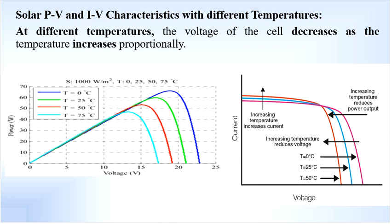The voltage is going to be reduced, but the current increases with temperature. At T equals 0 degrees centigrade the curve is pink, at T equals 25 degrees centigrade it is blue, and at T equals 50 degrees centigrade it is red. The red characteristic is at the higher side of current while the pink is at the lower side, confirming that as temperature increases, current increases but voltage shows the opposite — reducing in value.